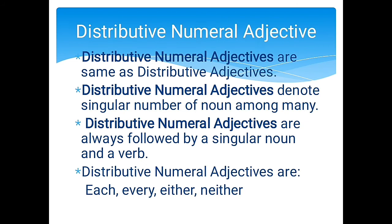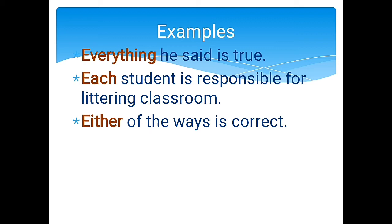Distributive numeral adjectives denote a singular number of noun among many. They are always followed by a singular noun and a verb. Distributive numeral adjectives are: each, every, either, and neither. They refer to individual nouns within the whole amount. Examples: 'Everything he said is true.' 'Each student is responsible for littering the classroom.' 'Either of the ways is correct.' They refer to members of a group as individuals.